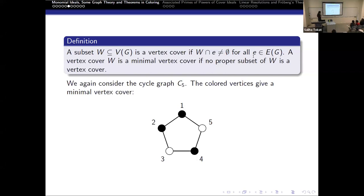Here is an important concept for us, which is a vertex cover. A vertex cover will be a subset of the vertices of a graph that covers every single edge. Here, if we pick one, two, and four, we can see that vertex one will cover this and this edge, two will cover this edge and this edge as well, and four will cover these two edges, so there is no edge left uncovered. We will call it a minimal vertex cover if it is minimal with respect to set inclusion. And this one here is minimal — we cannot remove any vertices from this cover.